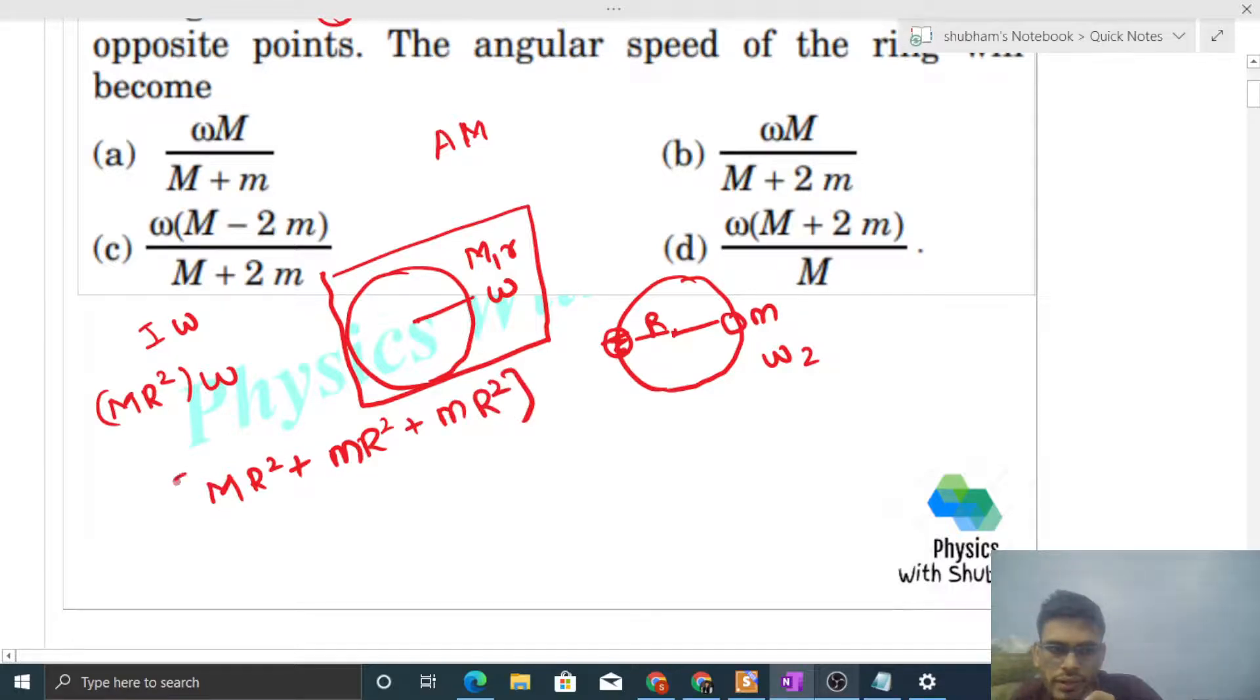This is I into omega 2. So just equate it and you will get the value of omega 2. Omega 2 will be simply capital M omega divided by capital M plus twice of small m. The r squared will cancel out. So this is the final angular speed of the ring.